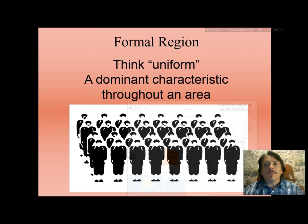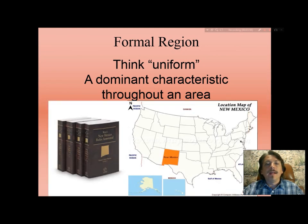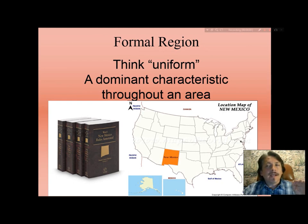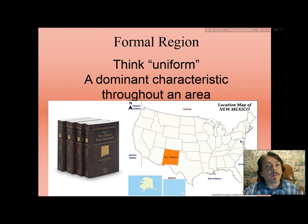States of the USA are formal regions. For example, we have New Mexico and a collection of New Mexico state statutes. The state, in its geographic integrity, is united by how it uniformly applies that law all over the entire state — from Farmington in the northwest to Hobbs in the southeast.